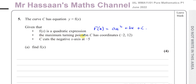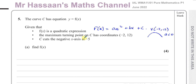We're also told that the maximum turning point on C has coordinates negative 2 and 12. Now we know a quadratic curve has one turning point, so this is going to be a maximum — therefore it's going to have this shape. A maximum means it's a frowny face, so the value of a must be negative. The vertex of this curve is negative 2 and 12, and it opens downwards.